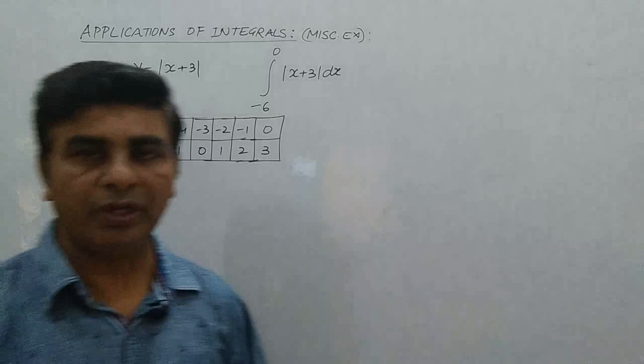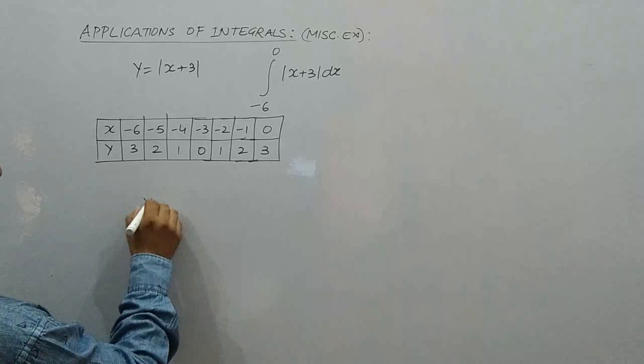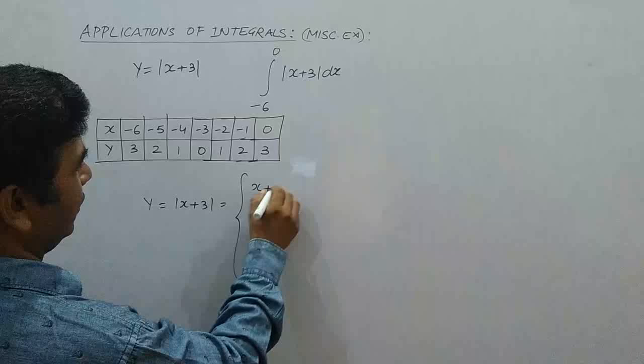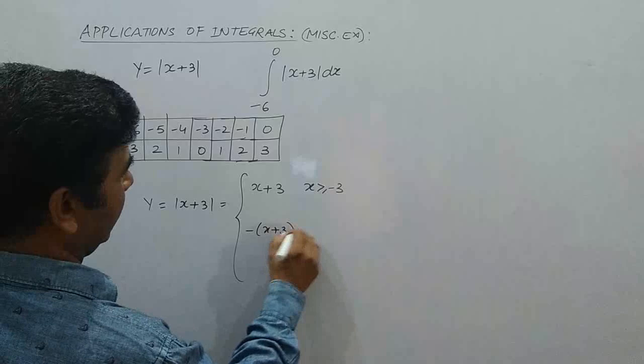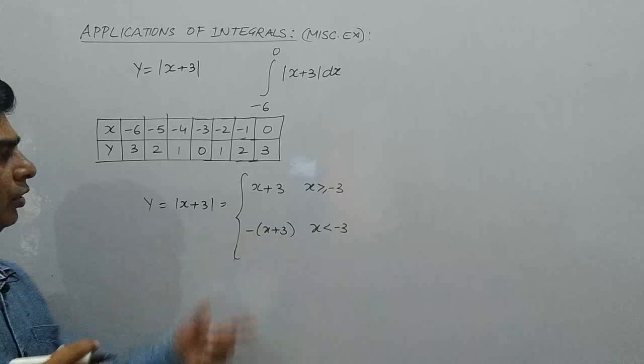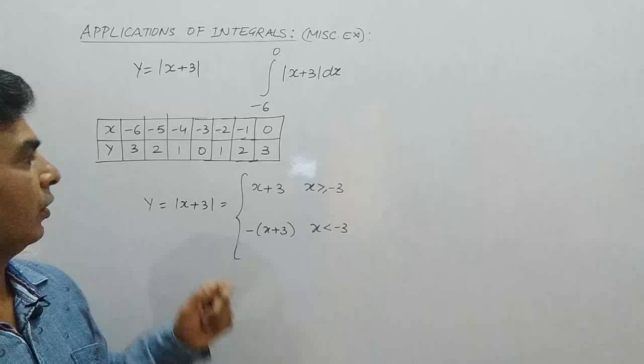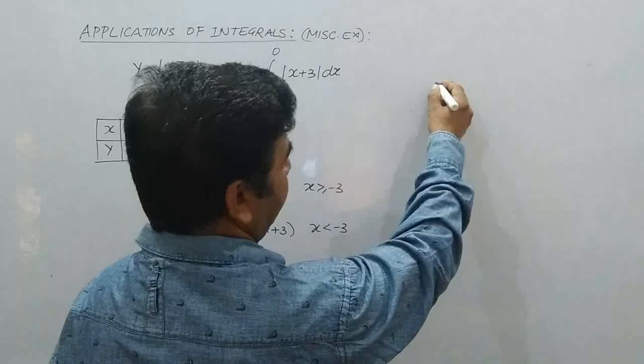You can generalize this function as well by writing y equal to mod of x plus 3 as: positive x plus 3 if x is greater than or equal to minus 3, and minus of x plus 3 if x is less than minus 3. By using this, you can also find the coordinates of the system to plot the graph. I have taken some values so that we can plot the graph for this modulus function.